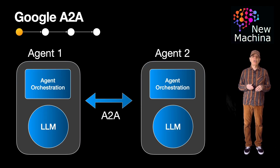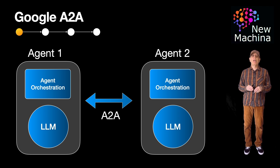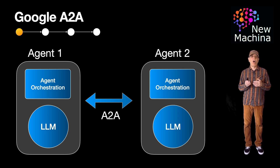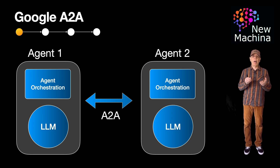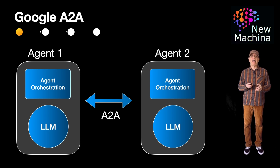Google Agent to Agent Protocol, or A to A, is a new way for AI agents to talk and work with each other. It's meant to make sure different agents, even if they're built by different companies, can work together smoothly and share tasks.